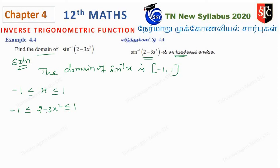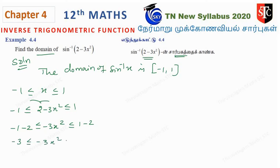So we need to solve the domain. We subtract 2 from all sides: minus 1 minus 2 gives minus 3, and 1 minus 2 gives minus 1. So we get minus 3 less than or equal to minus 3x squared less than or equal to minus 1.